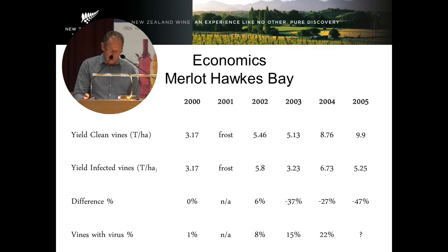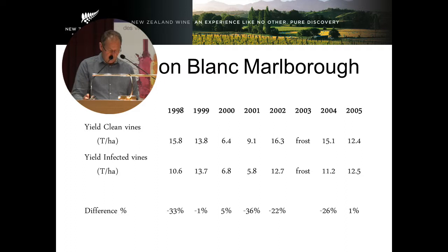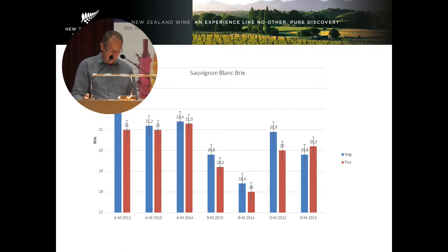A similar table for Sauvignon Blanc in Marlborough, which is not quite so straightforward and shows the seasonal effects of the impact on yields. The average loss of yield is 14% per year. We have also looked at sugar accumulation in Sauvignon Blanc. The graph shows the Brix measurements at three vineyards in three different locations in Marlborough. A significant difference in Brix in 2012, a slight difference in 2013, but no difference in 2014.